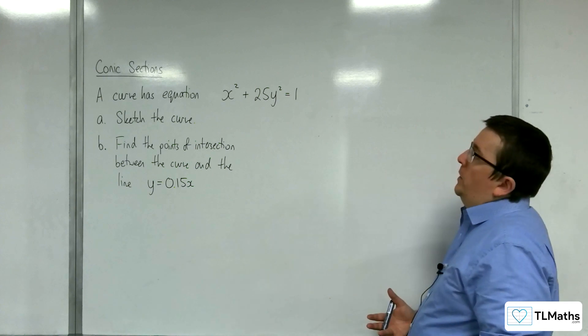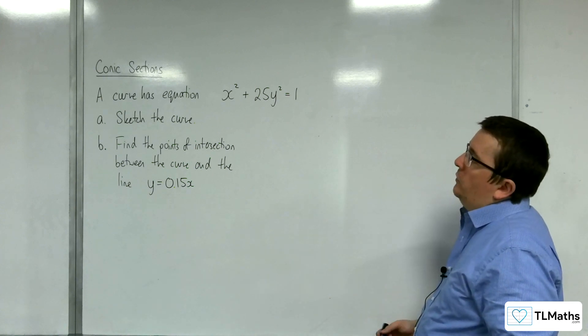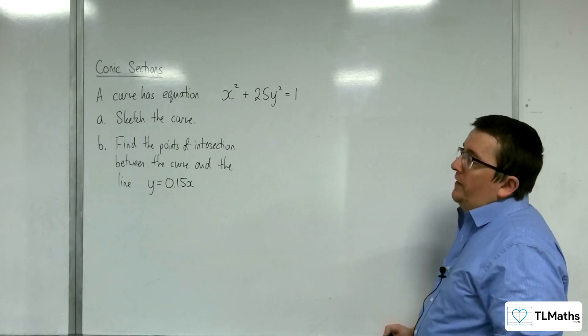In this problem, we've got a curve with equation x squared plus 25y squared equals 1. The first bit is to sketch the curve.